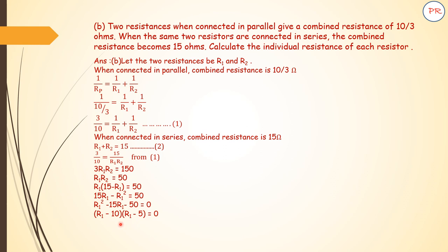We will factorize: R1 minus 10 into R1 minus 5 equals 0. So R1 equals 10 or R1 equals 5. If R1 is 10 ohms, then after substituting, R2 is 5. Both the resistances will be 10 ohms and 5 ohms.